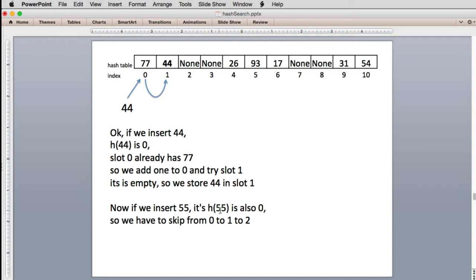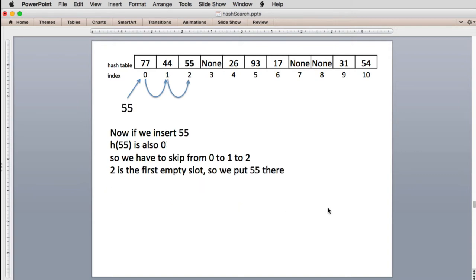Now we're going to insert 55. When we try to insert 55, it also has an index of zero for the hash. So that's full. It tries the next one. That one's full. So finally it finds an empty one in slot two and puts it there.